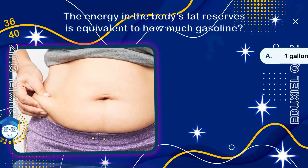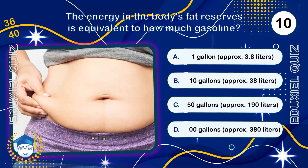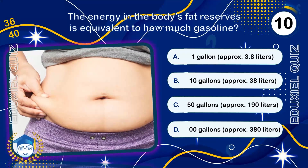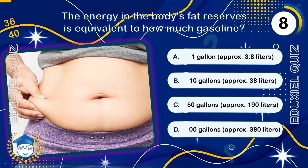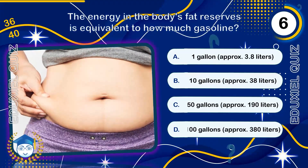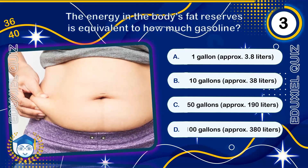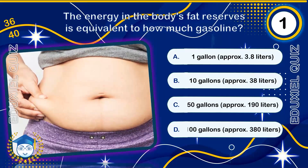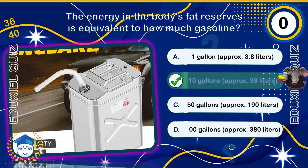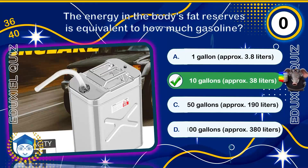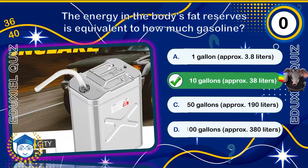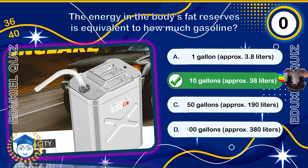The energy in the body's fat reserves is equivalent to how much gasoline? 10 gallons, approximately 38 liters. The average healthy adult stores around 50,000 to 100,000 kilocalories in fat, which is roughly the energy equivalent of 10 gallons of gasoline.